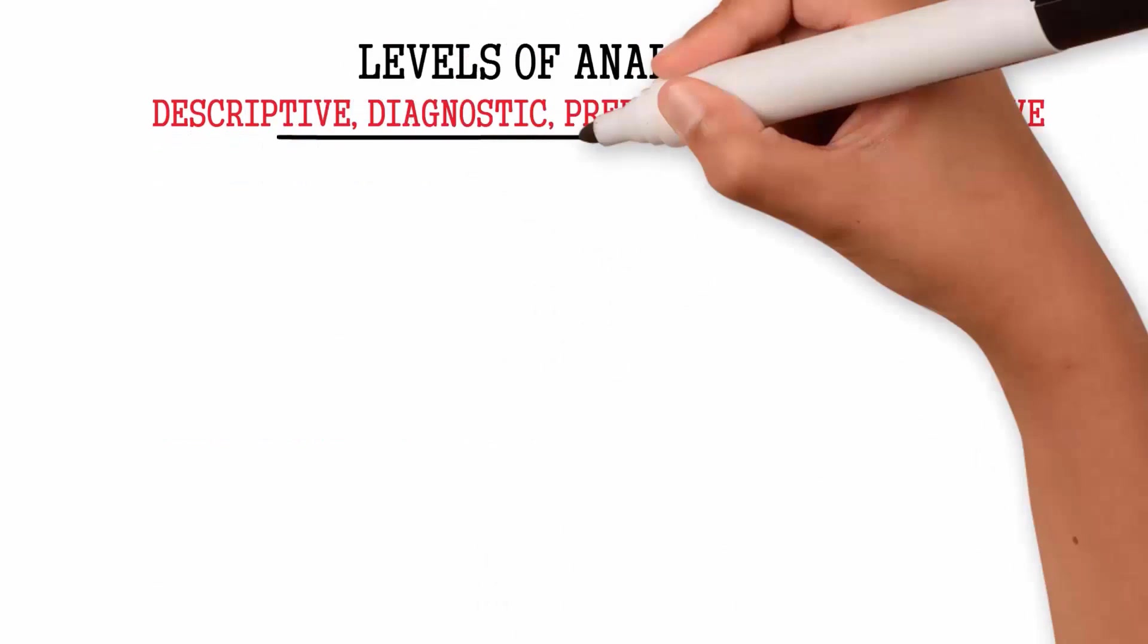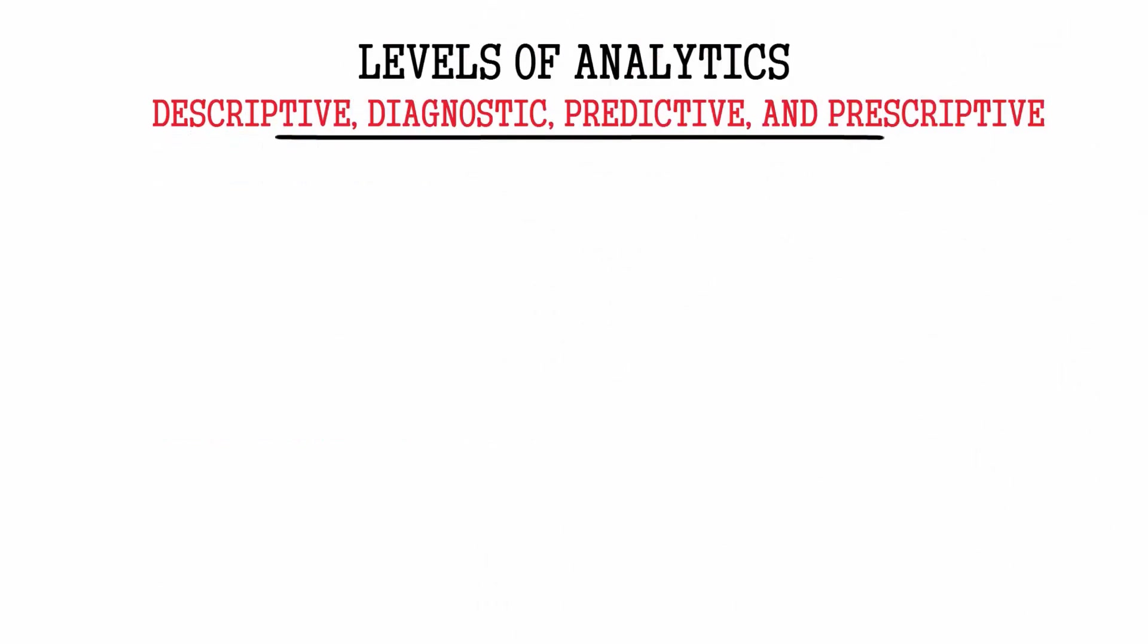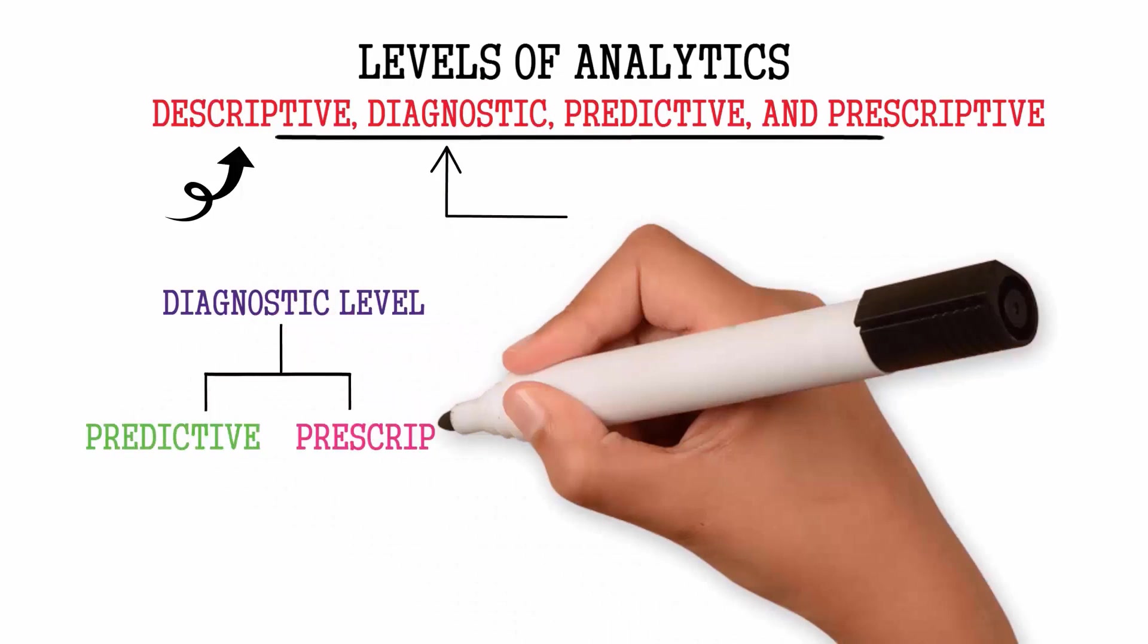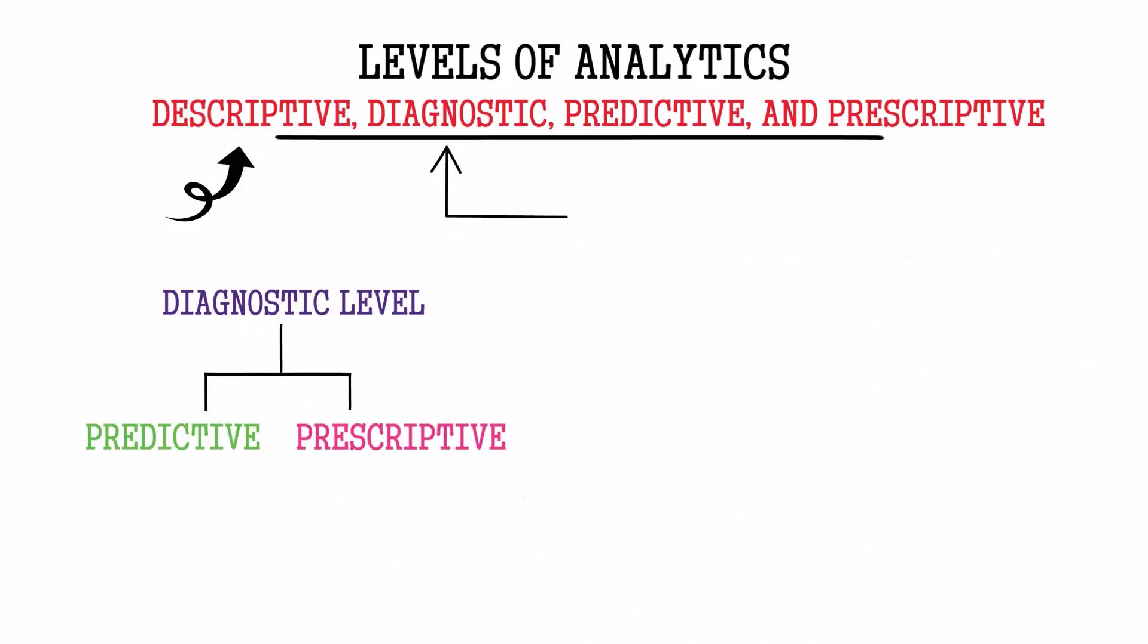Analytics has four levels: descriptive, diagnostic, predictive, and prescriptive. It's not a flow per se, but we all start with descriptive analytics, then move to diagnostic, and then diagnostic flows into both predictive and prescriptive, which actually flow into one another. It's still a bit abstract, but let's zoom into each of them.